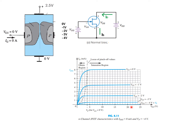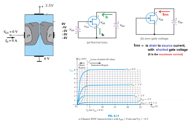Finally, at -4V, the current stops flowing or becomes 0. This is another way of looking at the pinch-off voltage, which is -4V. When VGS is 0V (shorted), the current ID is now called IDSS. At 0V, the current ID is called IDSS, and this is the maximum current possible.